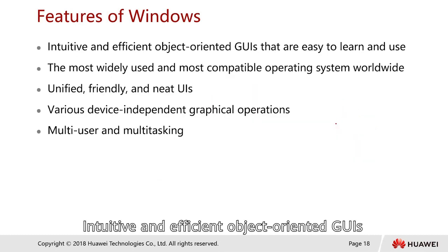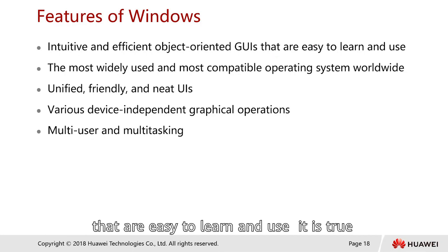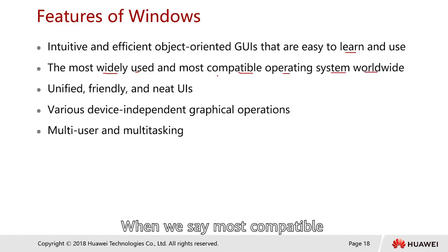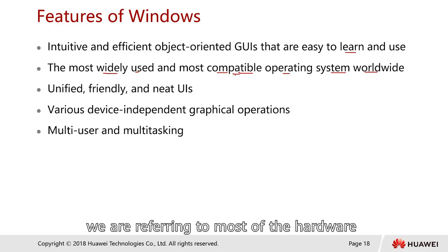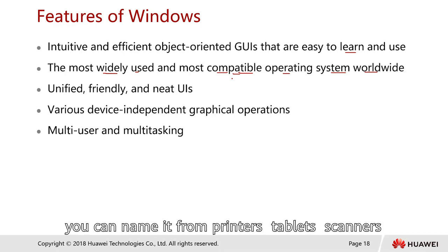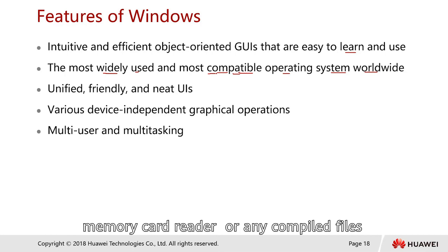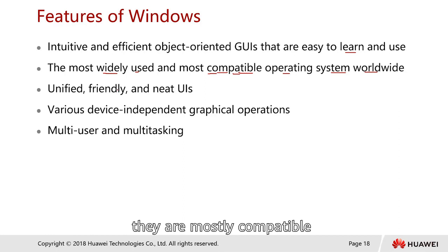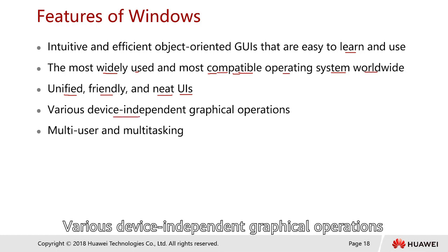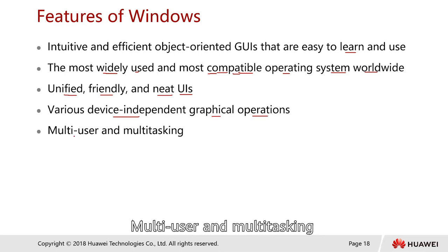Features of Windows: intuitive and efficient object-oriented graphical interface that is easy to learn and use. It is the most widely used and most compatible operating system worldwide. When we say most compatible, we refer to hardware — most gadgets and servers today, from printers to tablets to scanners to memory card readers and any kind of peripherals, support Microsoft Windows. It has a unified, friendly, and neat user interface, various device-independent graphical operations, and supports multi-user and multitasking.